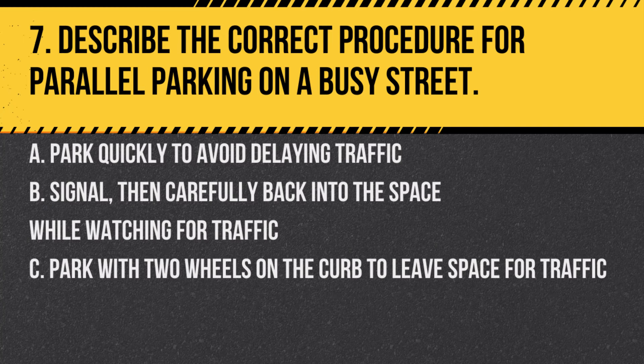Question 7. Describe the correct procedure for parallel parking on a busy street. A. Park quickly to avoid delaying traffic. B. Signal, then carefully back into the space while watching for traffic. C. Park with two wheels on the curb to leave space for traffic. Answer: B. Signal, then carefully back into the space while watching for traffic. Proper signaling and cautious maneuvering are key.